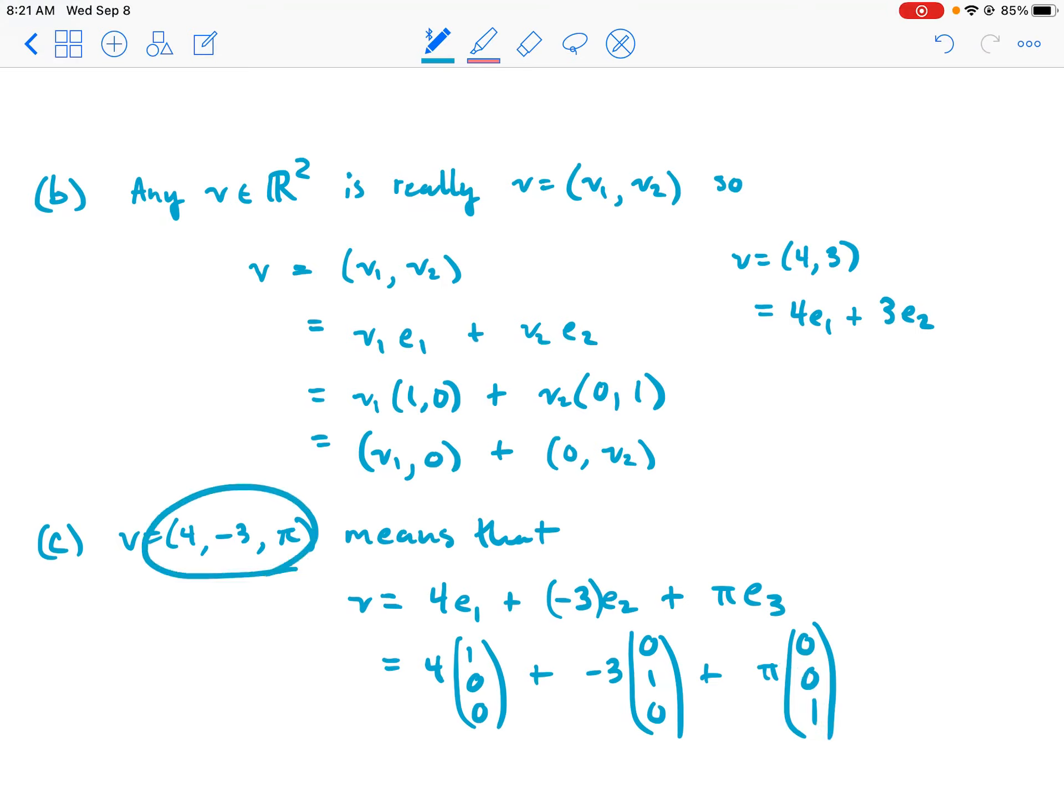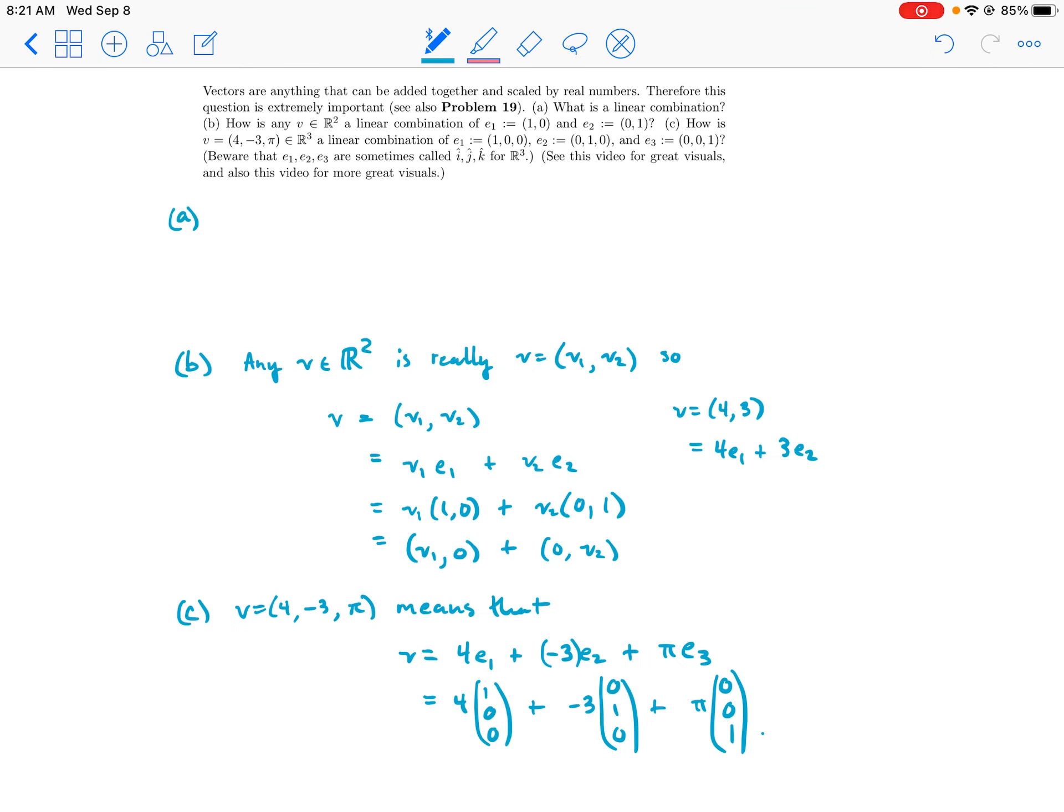And so you can see, like, the 4 just comes up there, the -3 goes in the second slot, and the π goes in the third slot. And that reconstructs this vector (4, -3, π). And that's it for (c).